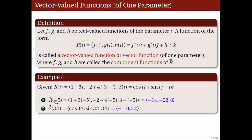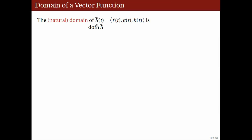So the input is a real number and the output is a vector. We have a new type of function, and it's now natural to ask what its domain is. In order for r to be defined at t, each of the components must be defined, meaning t should belong to the domains of f, g, and h. Thus, if no domain is specified, we take the domain of r to be the intersection of the domains of f, g, and h.